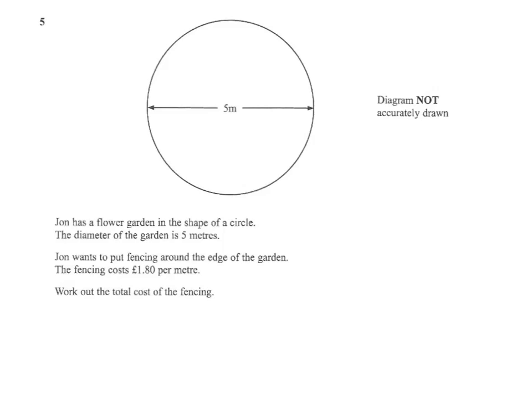In this question we're told that John has a flower garden in the shape of a circle. The diameter of the circle is 5 metres. John wants to put fencing around the edge of the garden.